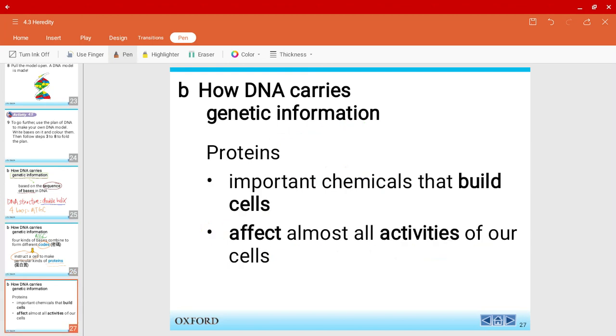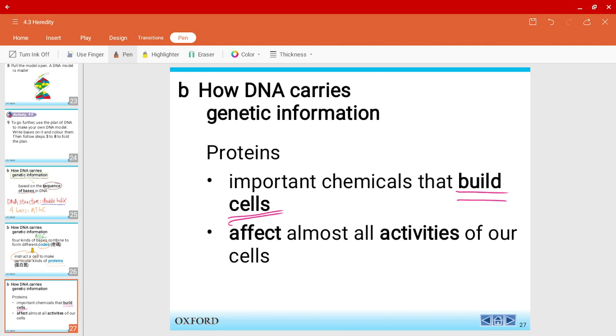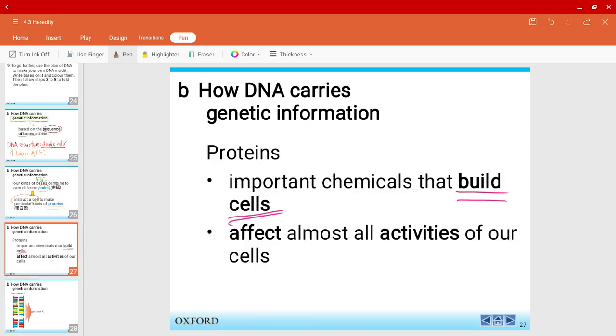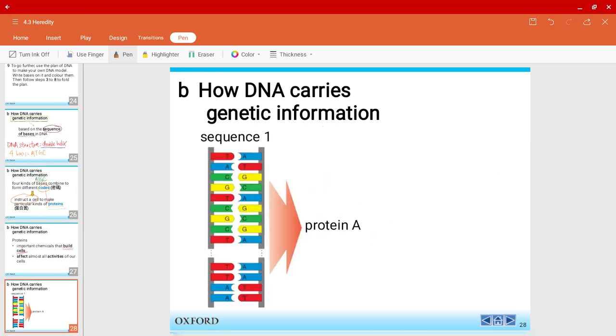So let me talk about protein now. Proteins are the important chemicals that help us to build cells. They can build cells, and they basically affect almost all the activities of our cells. So what do I mean by that? Now, look at this sequence over here. We have sequence one. Because, as I said, the codes are formed over here. Different bases, they can form different codes. And then the codes can instruct a cell to make proteins.